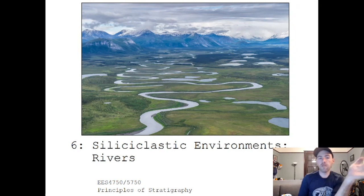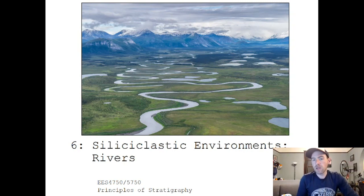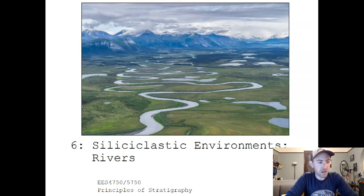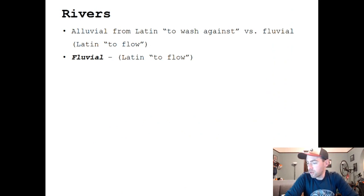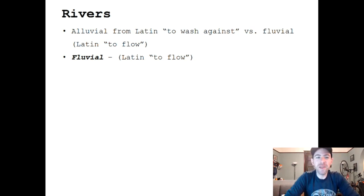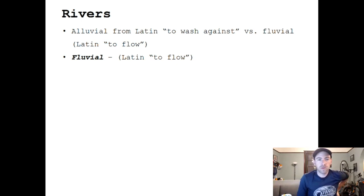I want to give an overview of river sediment transporting processes and river dynamics, and how those might result in some key facies and key identifiers of river systems. As we mentioned in the last lecture, rivers are flowing bodies of water that form corridors — the term comes from the Latin 'to flow,' as opposed to 'wash against,' which is the term for alluvial.